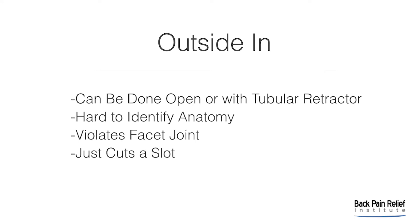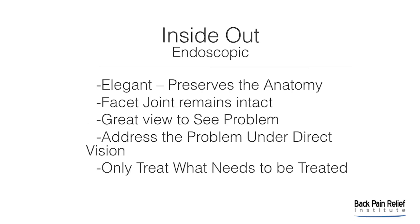If you go from the outside in, it can be done as open surgery or with a tubular retractor such as a Metrex tube. In my experience, it's hard to identify the anatomy — the facet joint is violated, and this type of procedure just cuts a slot into the facet so there's some room for the nerve to exist in the foraminal canal. When doing the foraminotomy from the inside out using the endoscopic approach, it's an elegant type of procedure. It preserves the anatomy, the facet joint remains intact, there's a great view to see the problem, and you can address the problem under direct vision — only treating what needs to be treated, nothing more.